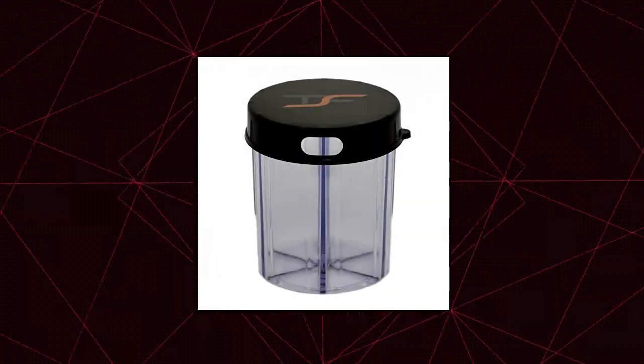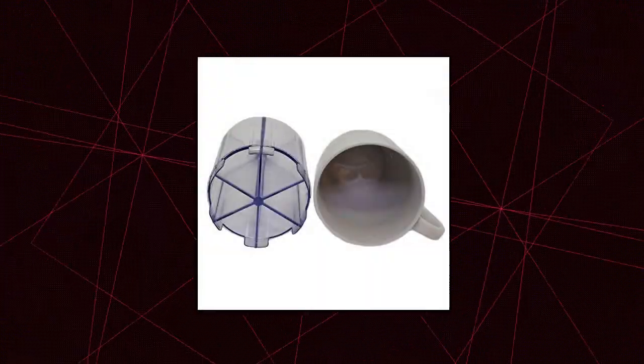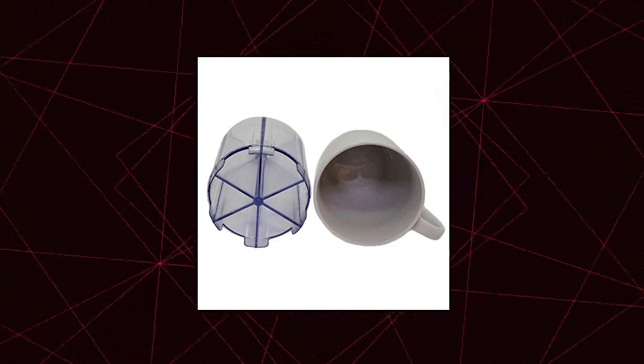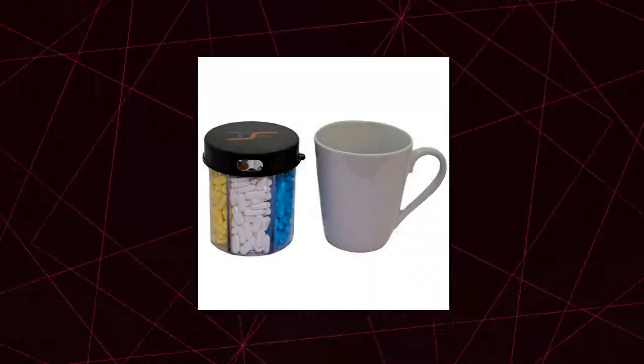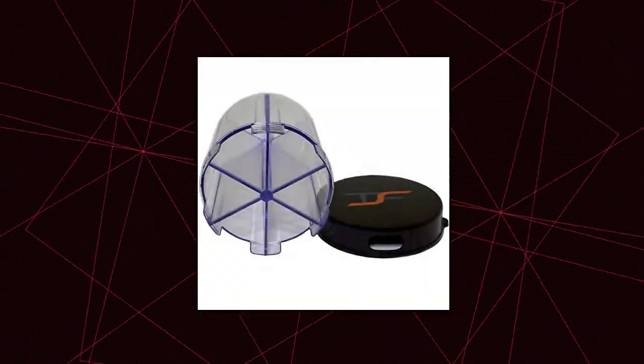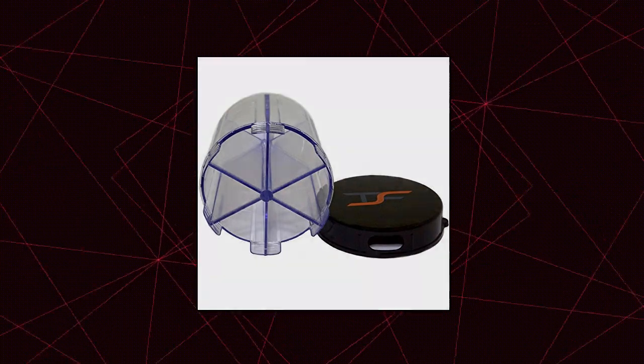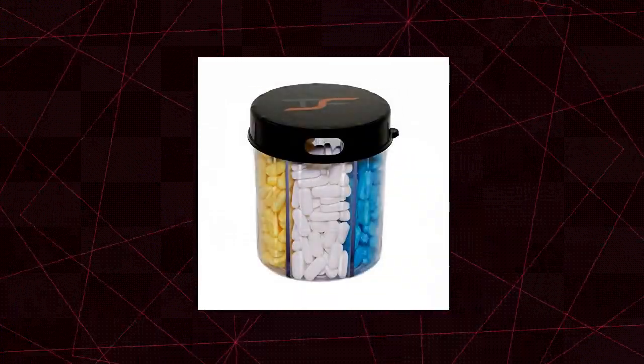TS-FIT travel pill vitamin medication holder. Six compartments to hold a full range of supplements. Large compartments, refill less often. Lid twists between compartments for easy dispensing. Large dispensing opening accommodate most pill sizes. 10 centimeters tall, 7.5 centimeters diameter.